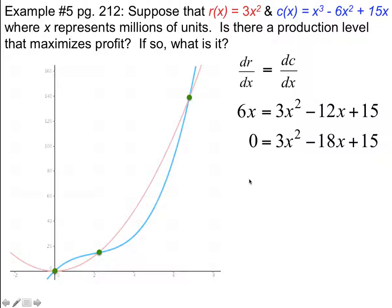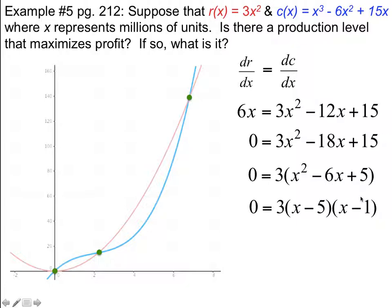Bringing 6x over, we see a trinomial. Factoring out a 3 and then factoring the trinomial gives factors of (x - 5) and (x - 1). So when x equals 5 million and x equals 1 million, we have slopes that are parallel. At x = 1 million, costs exceed revenues, so that's our maximum loss — we rule that one out.